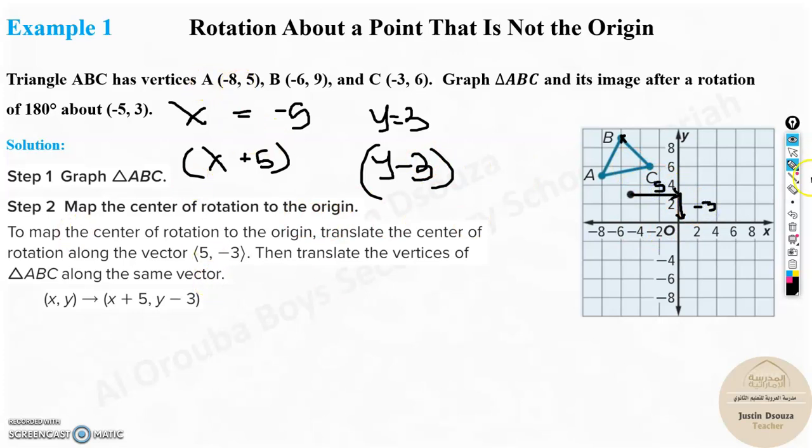So it is plus 5 minus 3. That is what we are doing to all these points now. A, B, C. So A will be minus 3, add 5 over here. Minus 3, 2. B will be adding 5 over here. It will be minus 1. And minus 3 from 9 will be 6. Same thing to C. Plus 5 will be 2. And minus 3 will be 3.